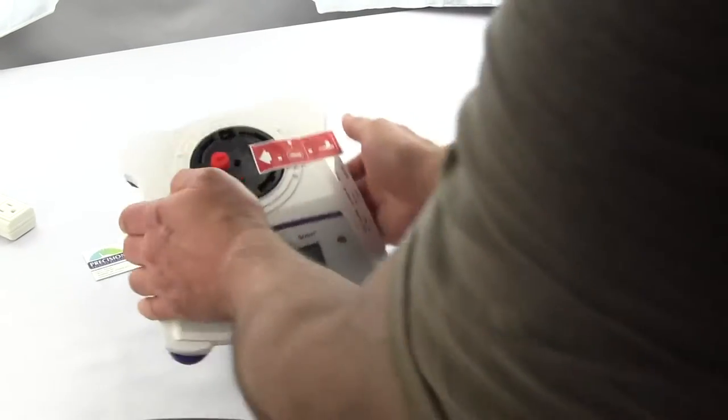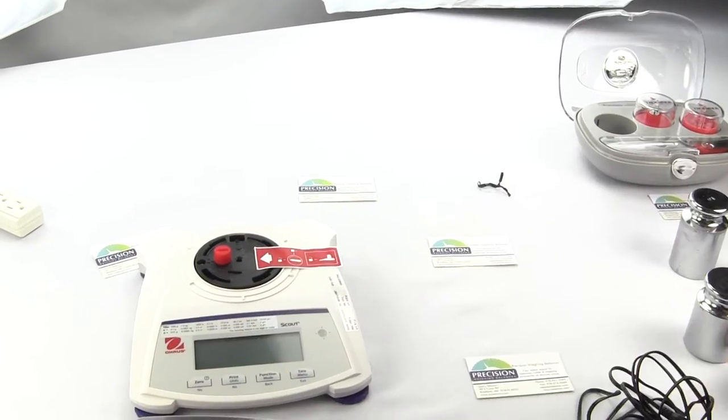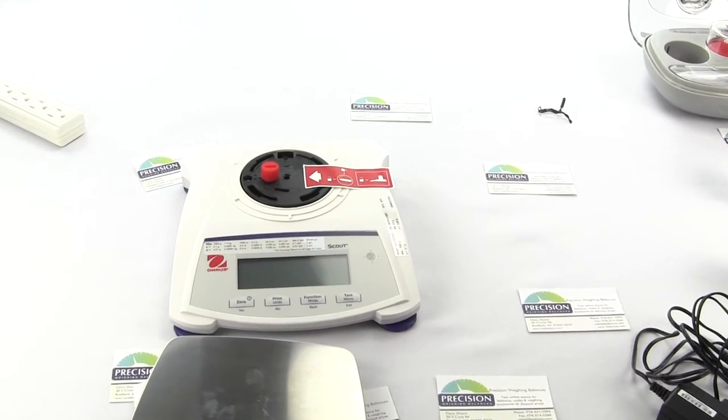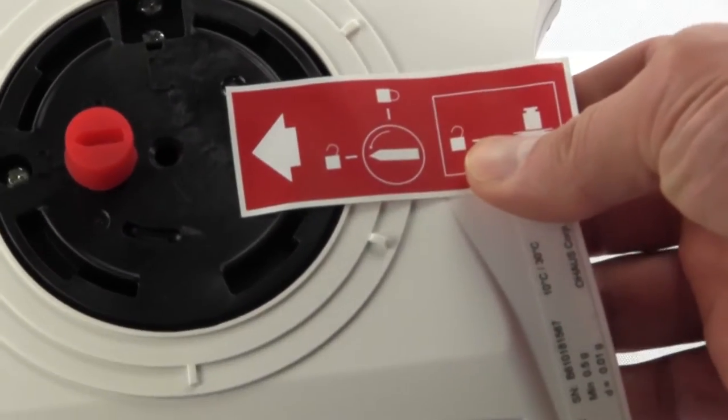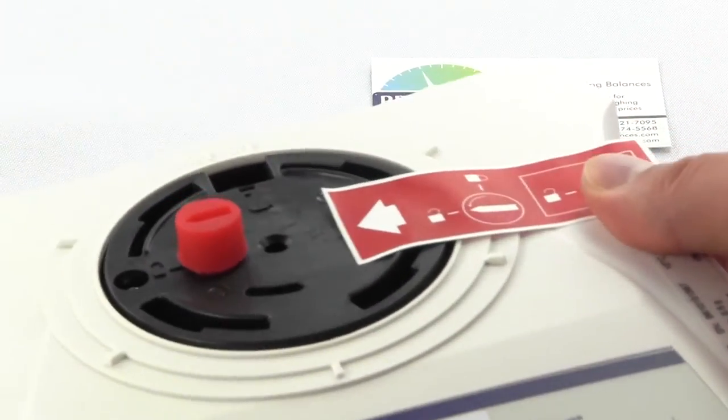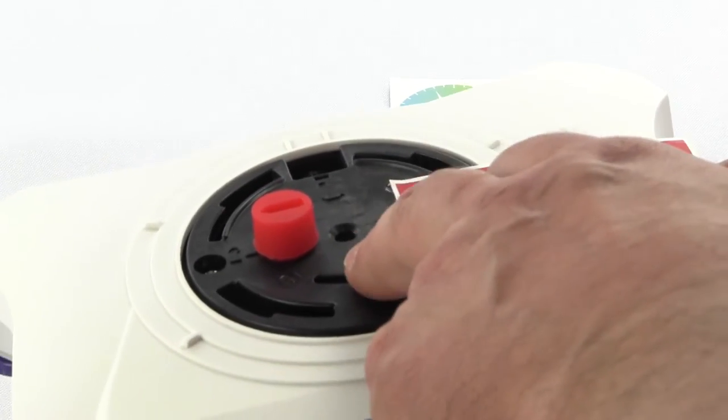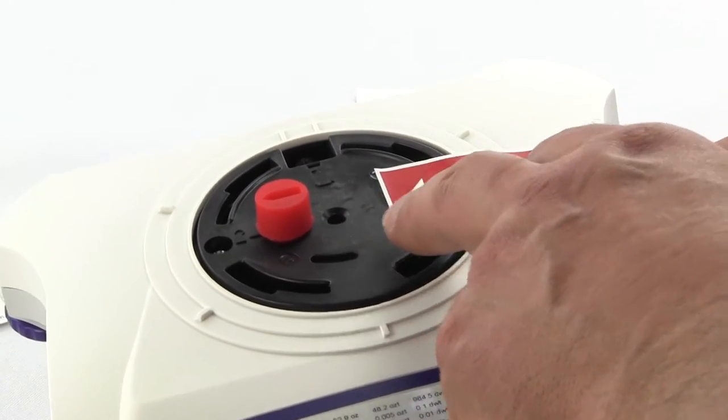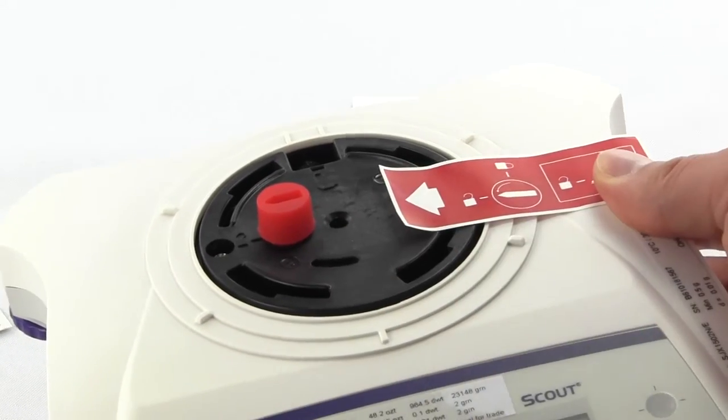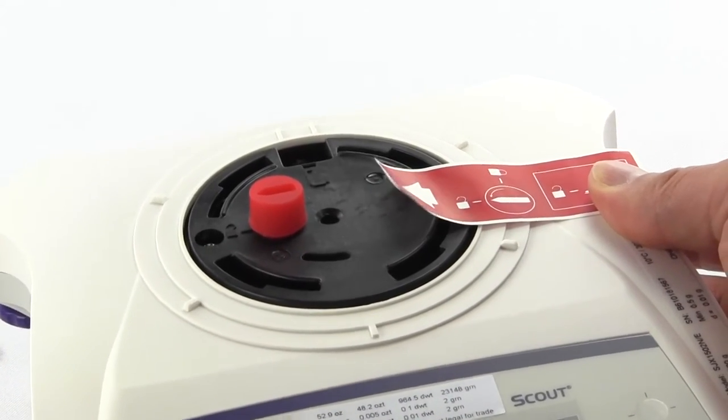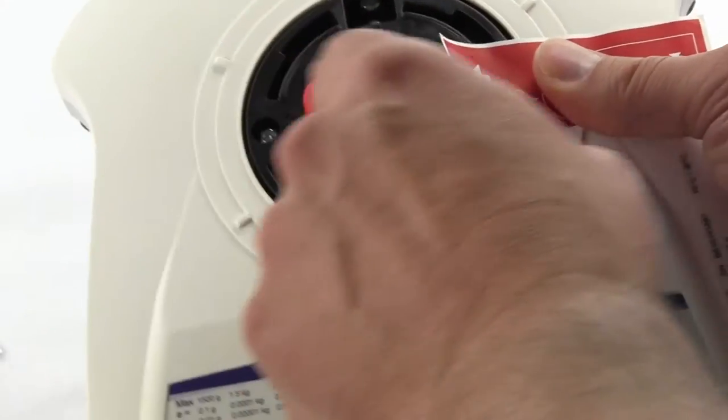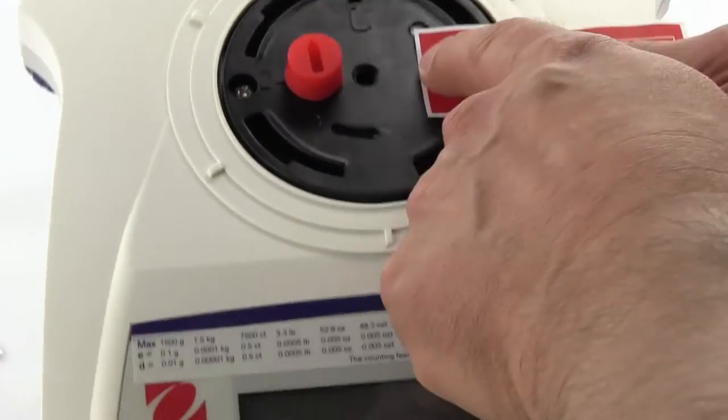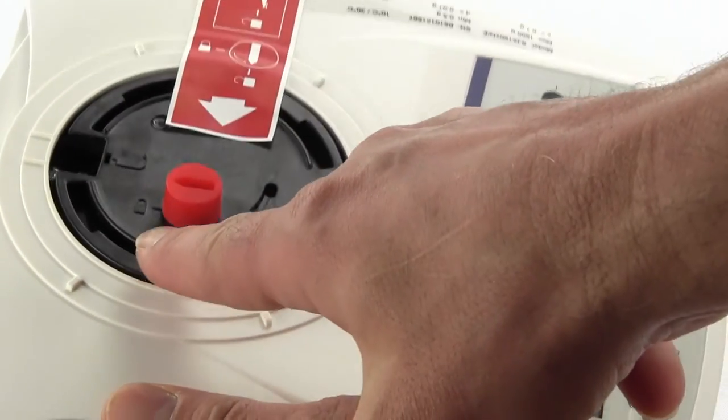First thing you notice, the scale has a red tag trying to highlight that there's something you need to do here. This is a transportation lock, that's what Ohaus calls it. What it basically does is during transportation they're trying to prevent the load cell, which is right underneath this, from being damaged from bouncing around. So this locks it in place.